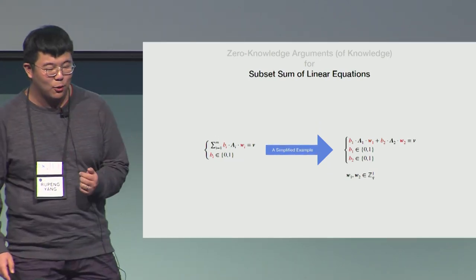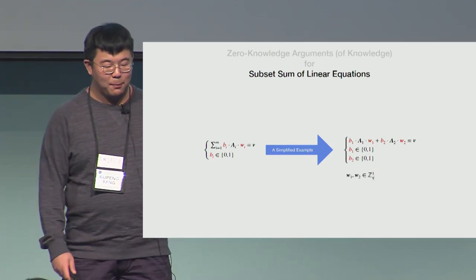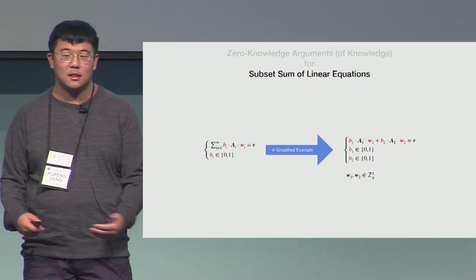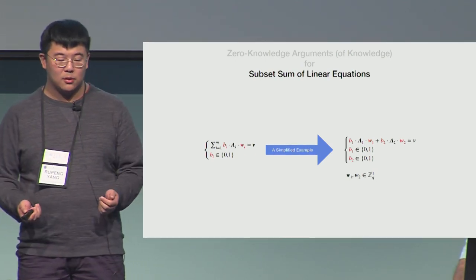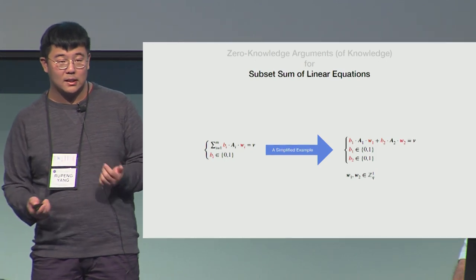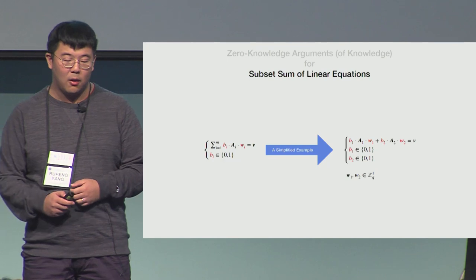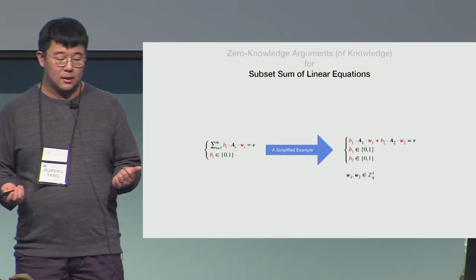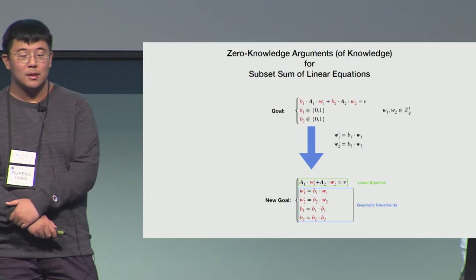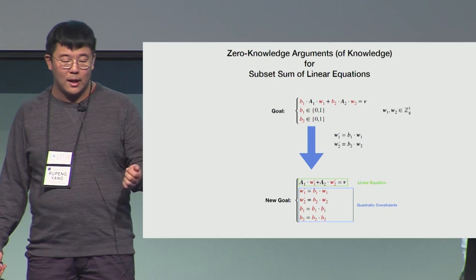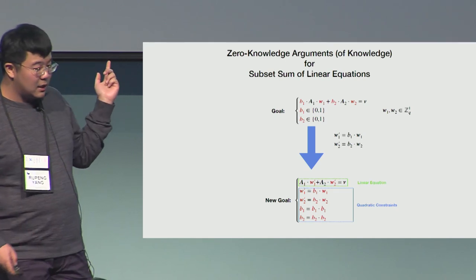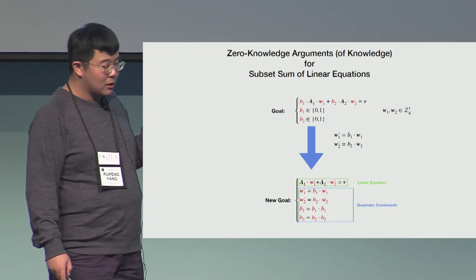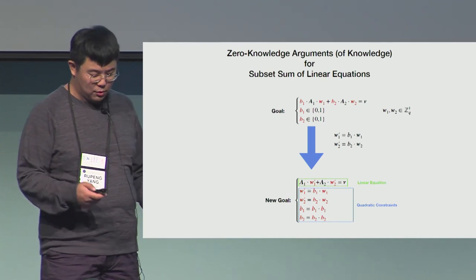Next, we prove subset-sum or multiplexing equations, where each b_i is a bit used to select each a_i*w_i, and the task is to prove that the sum of the selected a_i*w_i equals v. For the simplified example with m equals 2 and each w_i of dimension 1: let w_i' equal b_i * w_i, then we transform the first equation into a standard linear equation. The correctness of each w_i' and the fact that each b_i is binary can be argued with quadratic constraints, so again this is provable by our main protocol.